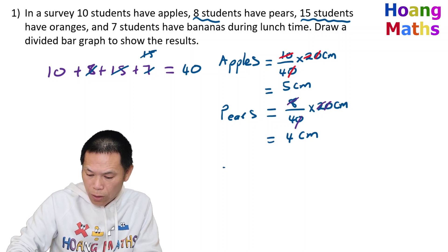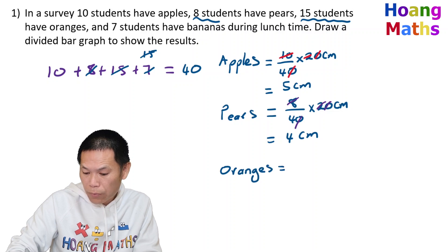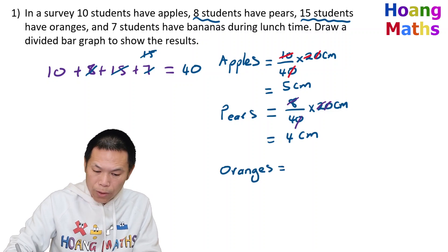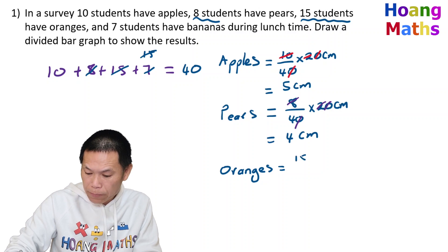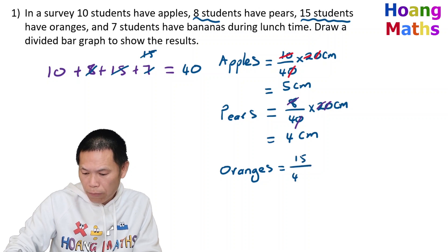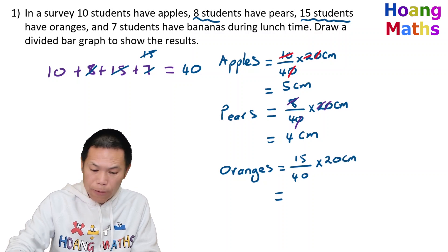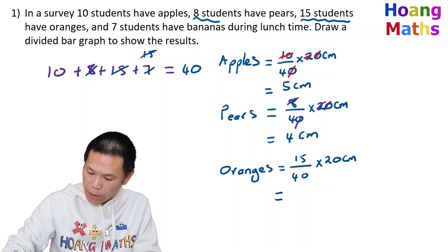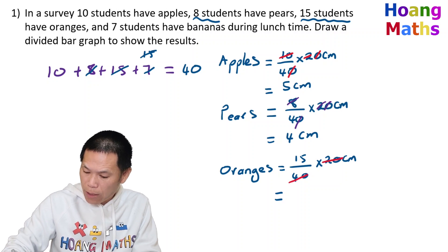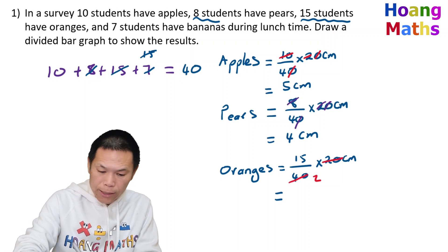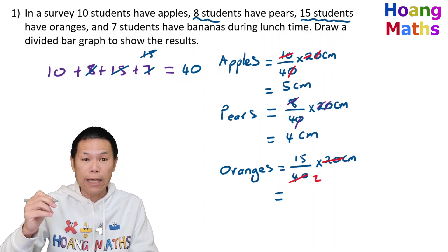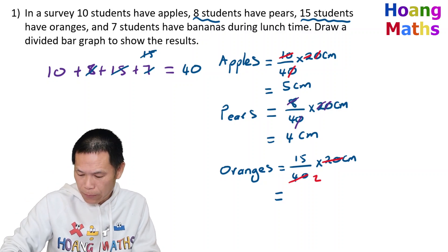For oranges: we have 15 students, so 15 over 40 times 20 centimeters. The 20 and 40 cancel to give us 2, and then half of 15 is 7.5, so oranges is 7.5 centimeters.